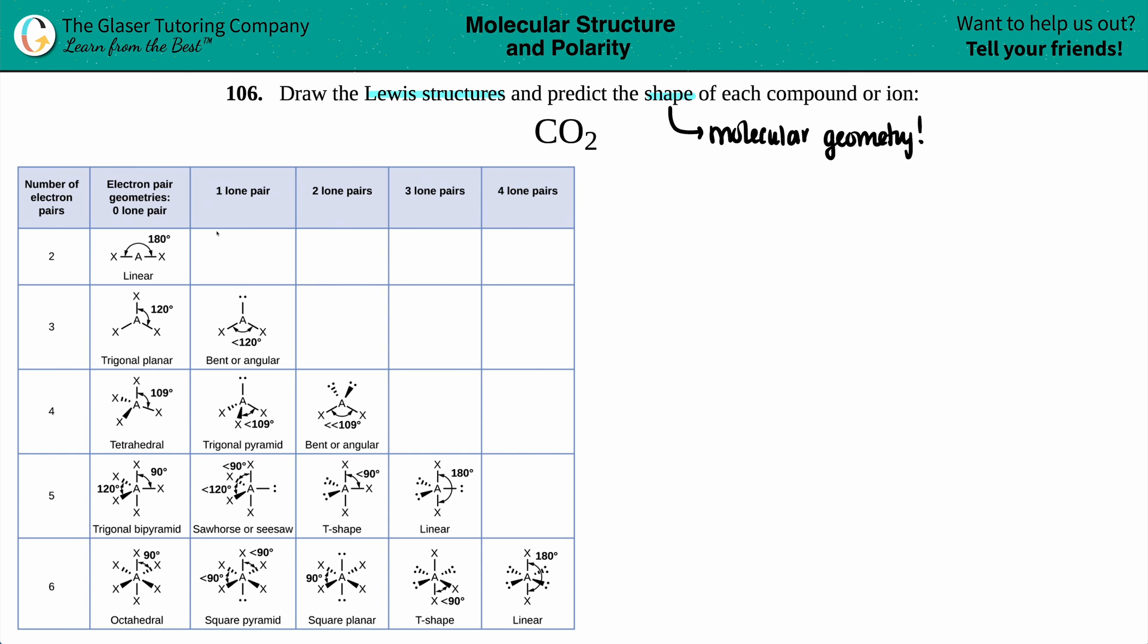Between carbon and oxygen, the least electronegative goes in the middle, and in this case that's carbon. So we've got carbon and two oxygens. Now if we're drawing the Lewis structure, Lewis structures always come from valence electrons.